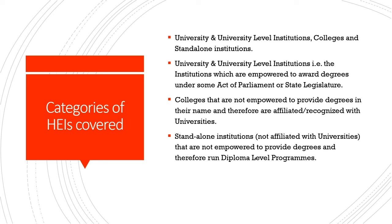All categories of higher education institutions are covered: university and university-level institutions (empowered to award degrees under an act of parliament or state legislature); colleges (affiliated and recognized with some university, not empowered to provide degrees in their own name); and standalone institutions (not affiliated with universities, not empowered to provide degrees, running diploma-level programs). This information is available at the state level and district level, helping to carry out research on progress in higher education in India.